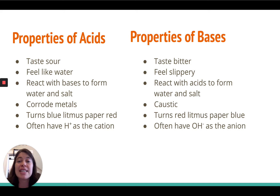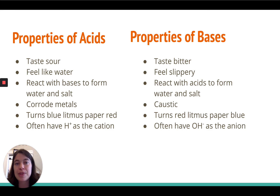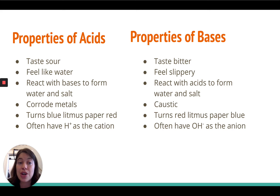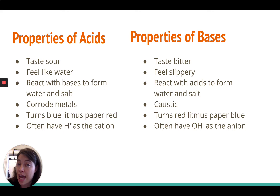Both acids and bases can change the colors of indicators. Indicators are special types of chemical which change colors in the presence of an acid or a base. One really common indicator is litmus paper, which is made out of a plant that can change colors depending on whether something is acidic or basic. If you have blue litmus paper, it will turn red in the presence of an acid. And if you have red litmus paper, it will turn blue in the presence of a base.